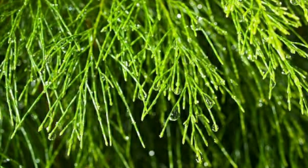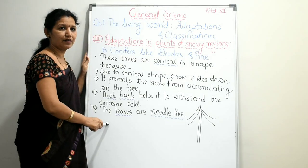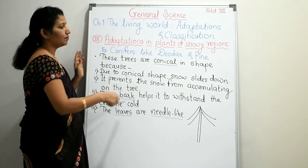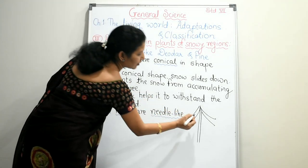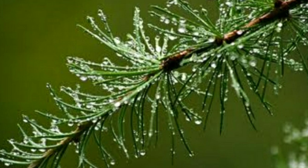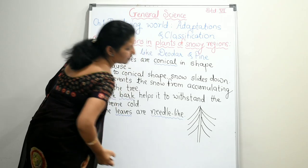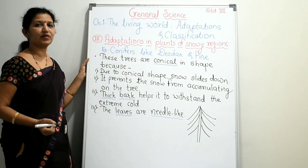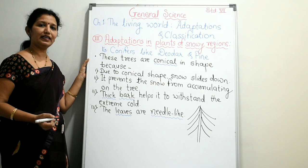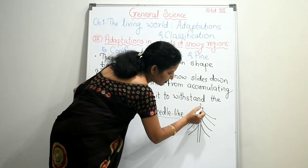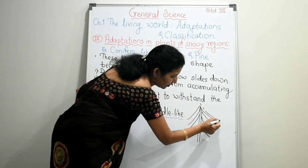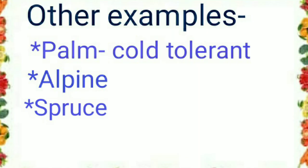Also, the leaves are needle-like. Because of their needle-like shape, the snow that gets accumulated on the plants can slide down easily.